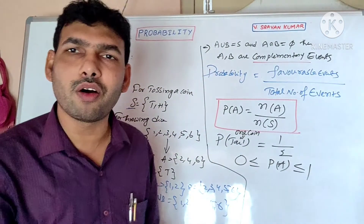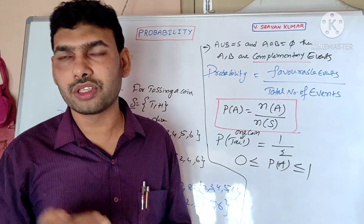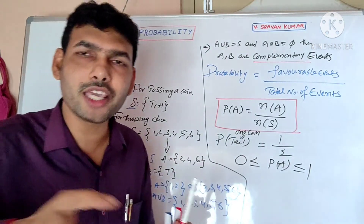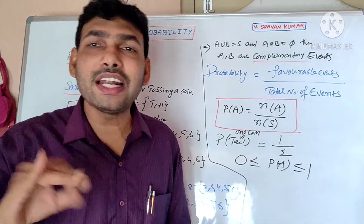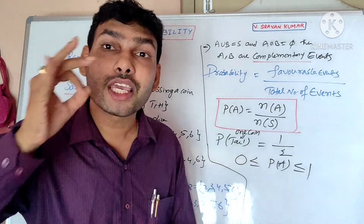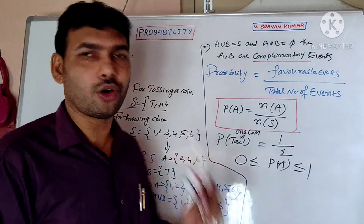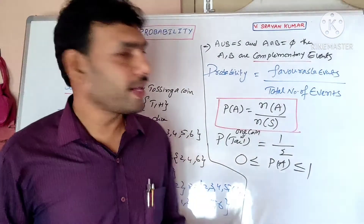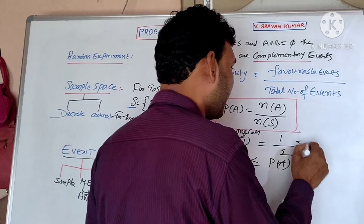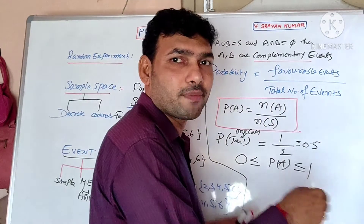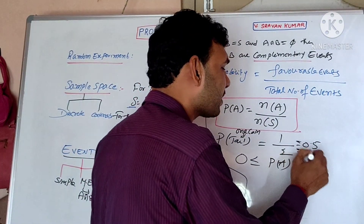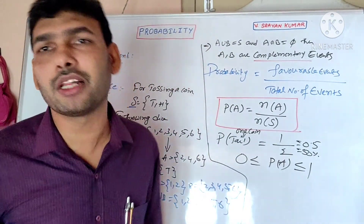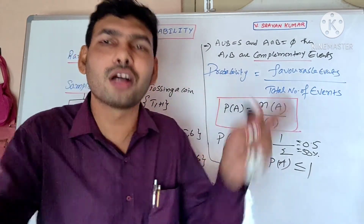The probability value always lies between 0 and 1. At worst condition, probability is 0 — that is for an impossible event, which never happens in the random experiment. An event which always happens has a probability of 1, meaning 100% chance. A probability of 1/2, which equals 0.5, means a 50% chance.